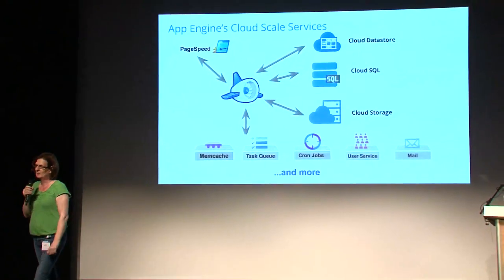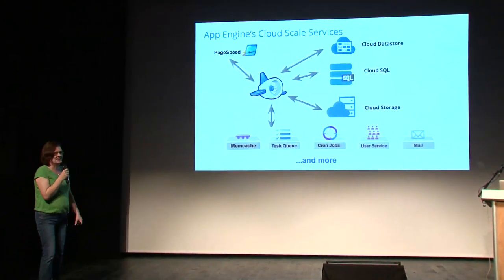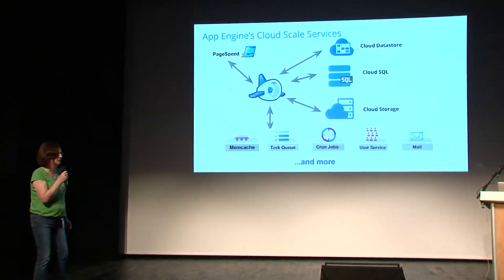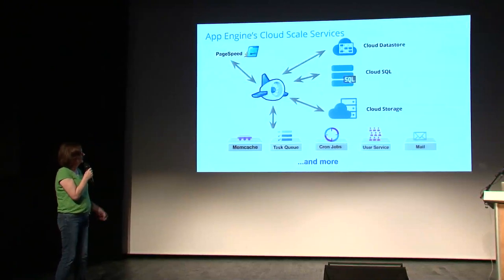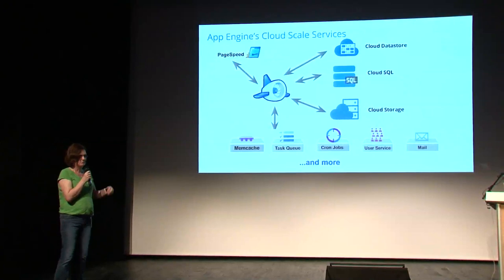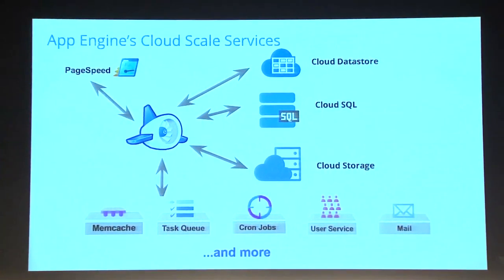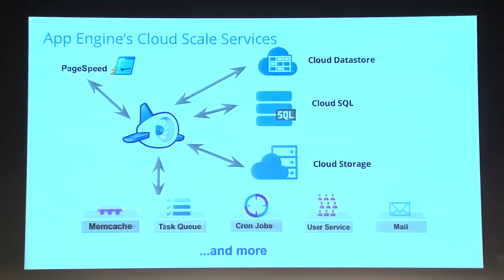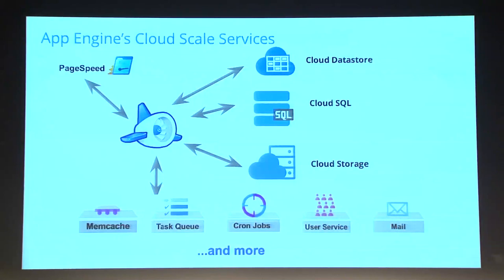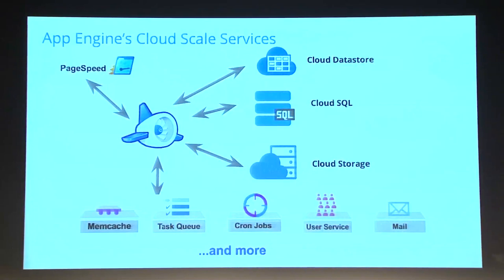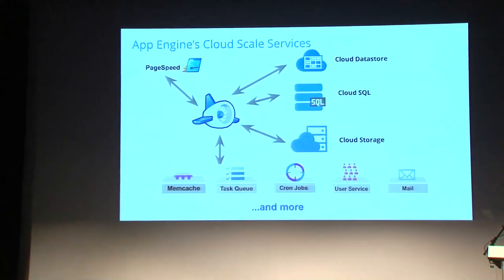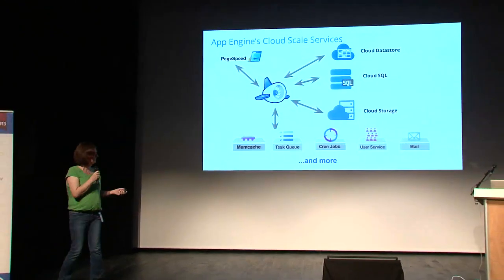Cloud-scale services available with App Engine — some make your life easier, some give you access to features you wouldn't have otherwise. For storage: Cloud Datastore is accessed via API from PHP; Cloud SQL is effectively MySQL in the cloud and is a managed service; Cloud Storage is a bucket-based store for unstructured data up to 5 terabytes per object. Other services include Memcache, Task Queues, Cron jobs for scheduled tasks, a User service for authentication, Mail, and PageSpeed to optimize serving of requests — that's a paid service.